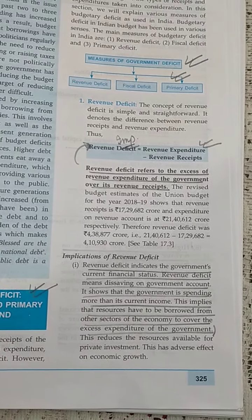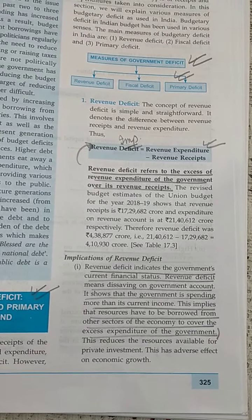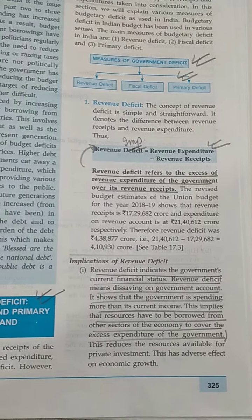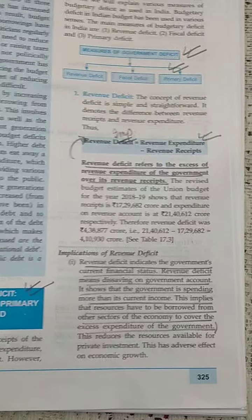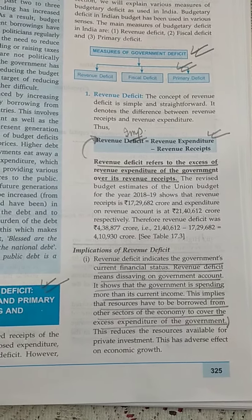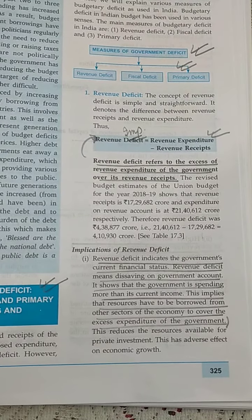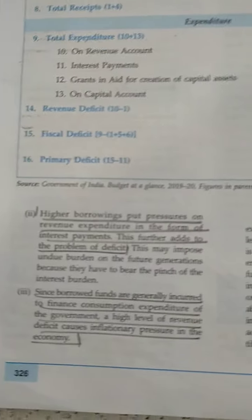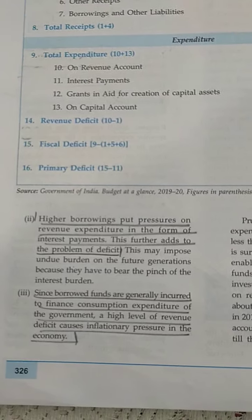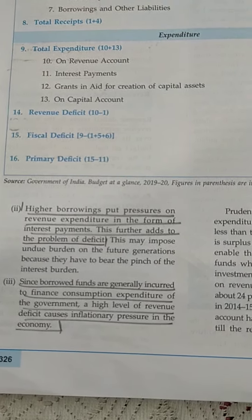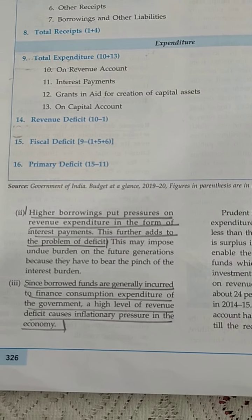What are the implications of revenue deficit? Revenue deficit indicates the government's current financial status. It tells us that the government is spending more than its current income. It also implies that the government will have to borrow more resources to cover the excess expenditure.